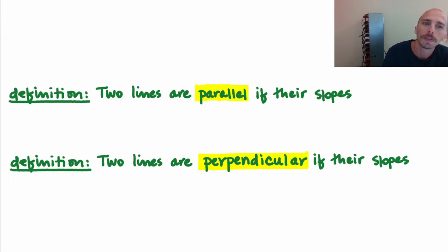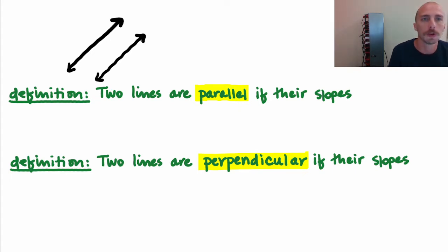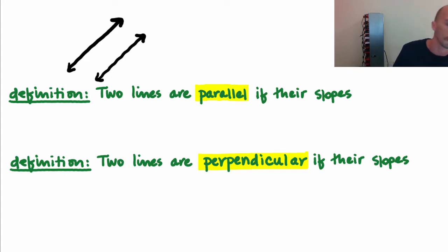First let's talk about parallel lines and perpendicular lines. You remember from geometry, two parallel lines never intersect. And if I think about the slopes of two parallel lines, I'd see that they've got the same inclination, so I would say they have the same slope. Two lines are parallel if their slopes are equal.